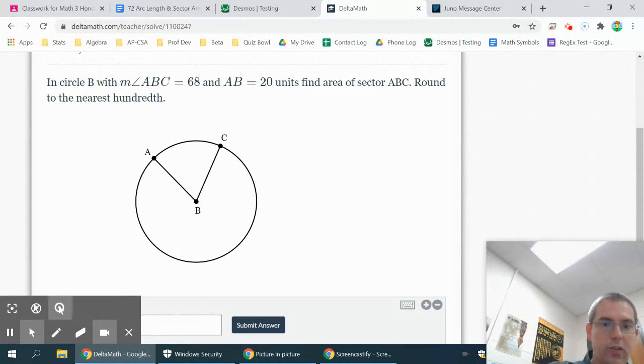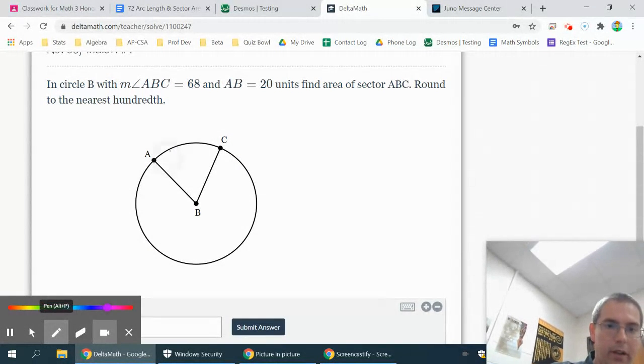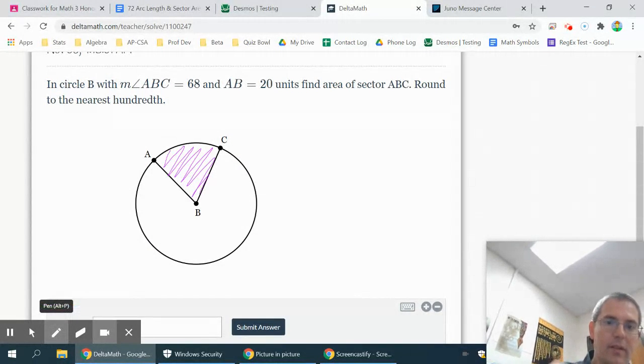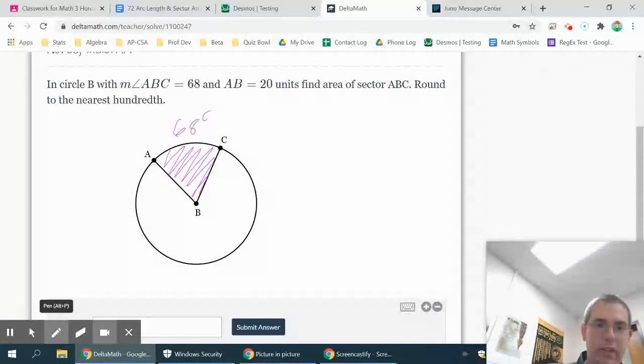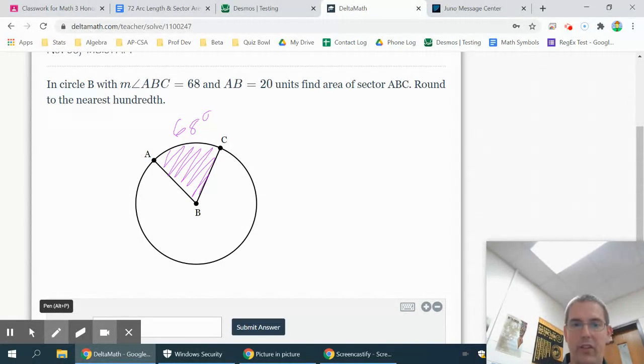Okay, sector ABC is talking about this little wedge of pie right here. A little slice of pizza, slice of pie looking thing. And they give you the measure of angle ABC is 68 degrees, so that means this arc here is 68 degrees. That's going to come in handy. And then AB is 20, and that's your radius.